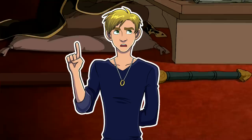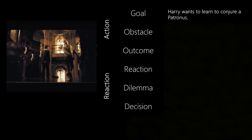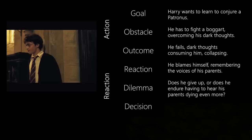Let's discuss three important scene types. The first is the action-reaction scene. In the action half, the character has a goal, they meet an obstacle, and the outcome is usually disastrous. In the reaction half, they react psychologically to the outcome, they face a dilemma, and they make a decision. In Harry Potter and the Prisoner of Azkaban, Harry wants to learn to conjure a Patronus, fights a Boggart but fails, then blames himself, has to decide whether to continue, and he does.